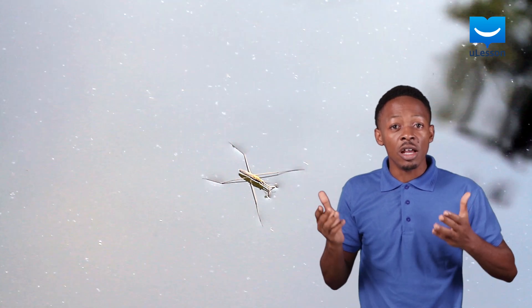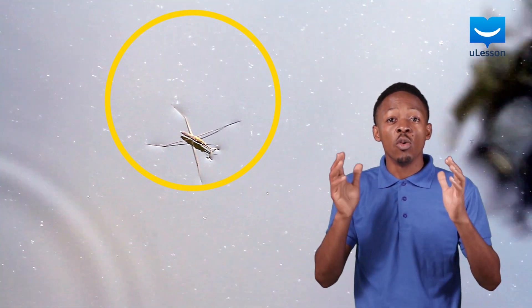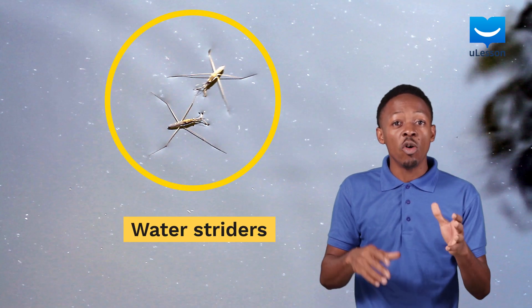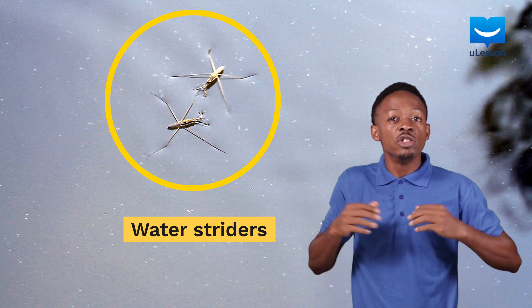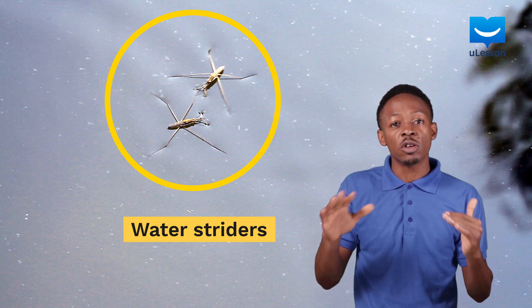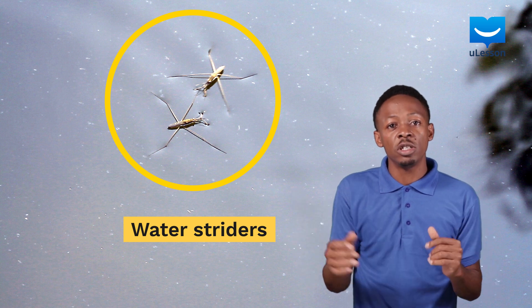Now, did you know that there are some reptiles and insects that can walk on water? Some of these animals are able to walk or stay on water due to this phenomenon called surface tension. For instance, water striders can stay or walk on lakes, ponds, or rivers due to the ability of the water surface acting like a stretched skin and supporting them.